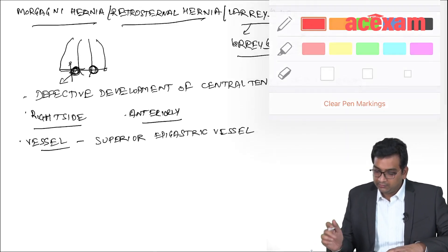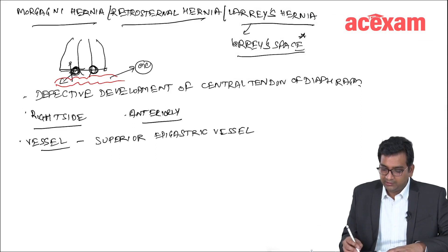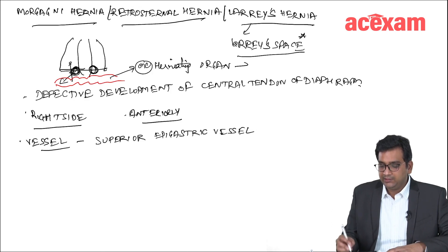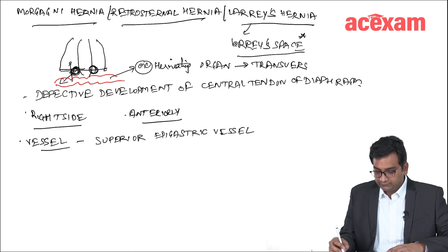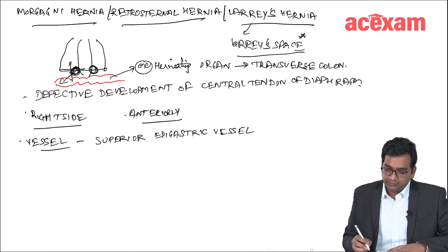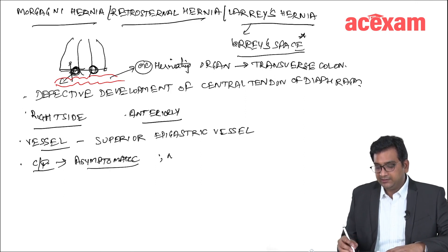The most common organ present in Morgagni hernia is the transverse colon. Whereas in Bochdalek hernia, the most common herniating organ is the stomach. Regarding clinical features of Morgagni hernia, in majority of patients it is asymptomatic, and we incidentally detect it on chest X-ray.